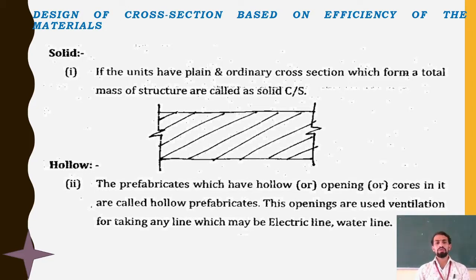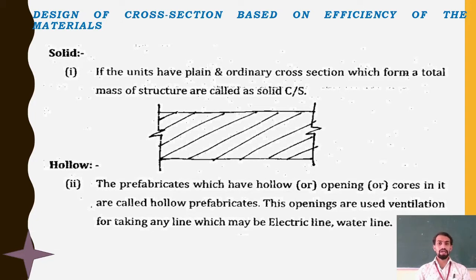Then comes hollow: prefabricates which have hollow openings or cores in them are called hollow prefabricates. These openings are used for ventilation or for running electric lines, water lines, or any piping connections. Usually the hollow connections serve as electrical conduits wherever electrical connections are required.